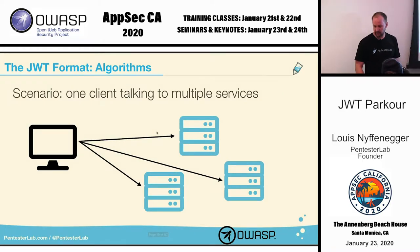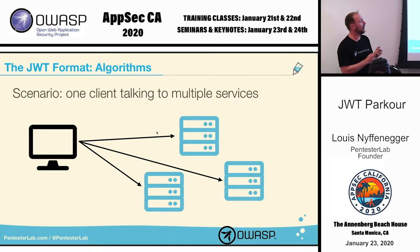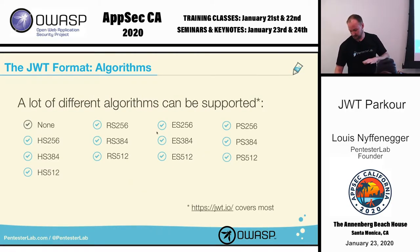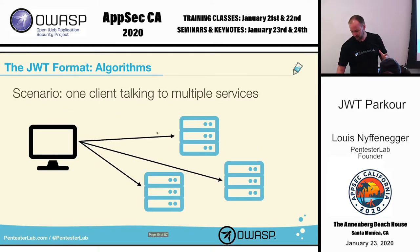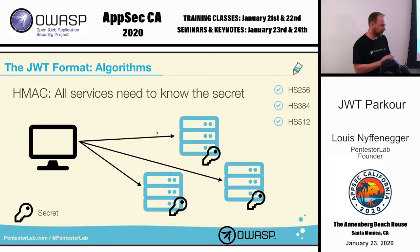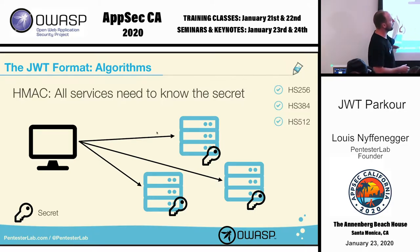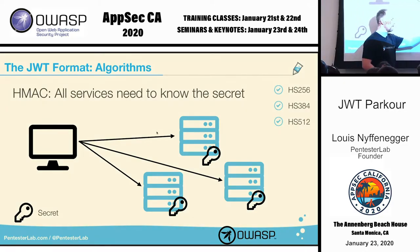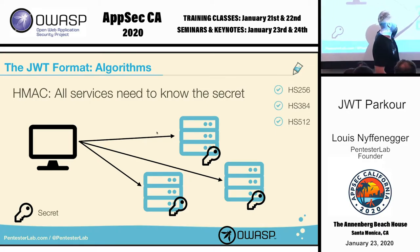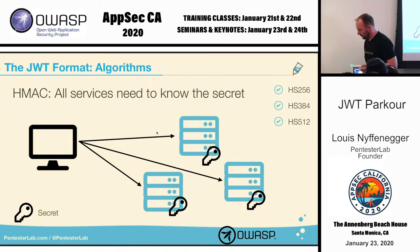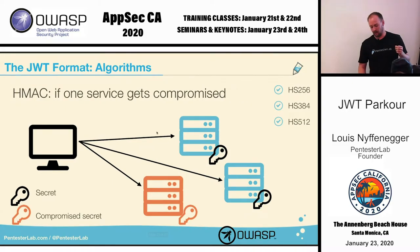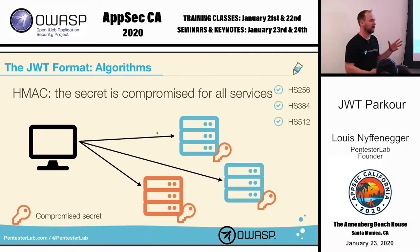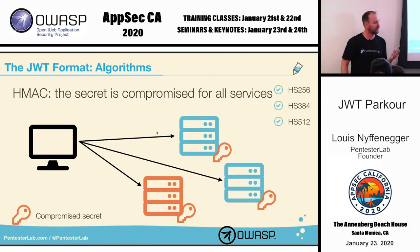Why would you want so many algorithms? If you're using HMAC and you've got one client talking to many microservices, every single microservice needs the key to verify the token. So if one of your microservices gets compromised, they're all compromised — you can forge your own token and it's game over.